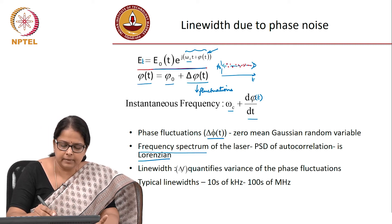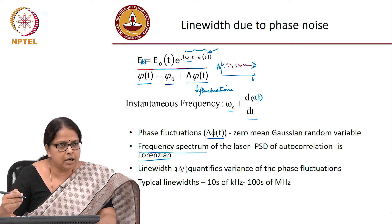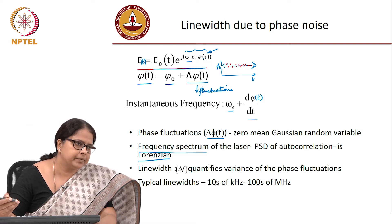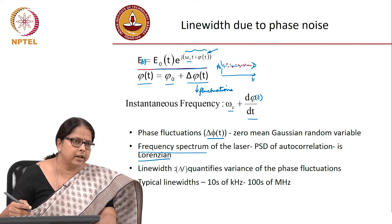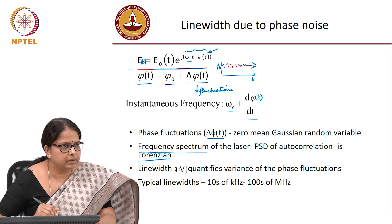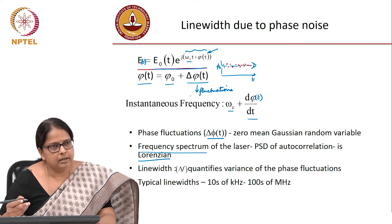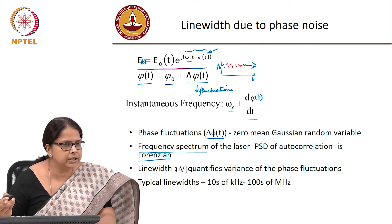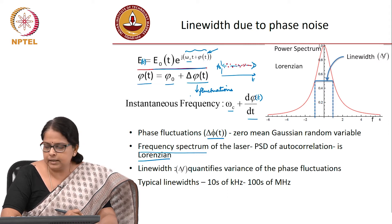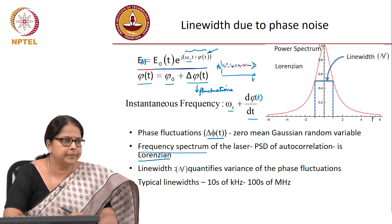If I have E(t), an electric field with a phase having a Gaussian distribution, and I do an autocorrelation followed by a Fourier transform, I get the power spectral density. Because this is a Gaussian random variable, all processes can be analytically solved, and the power spectral density comes out to be a Lorentzian function. So E·e^(jφ) with Gaussian φ, autocorrelated and Fourier transformed, gives a Lorentzian.